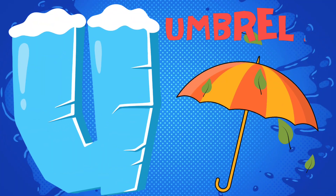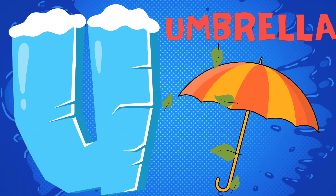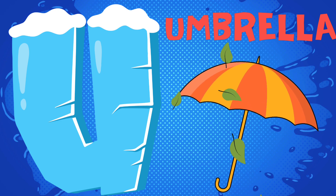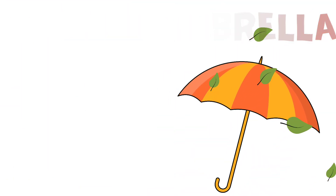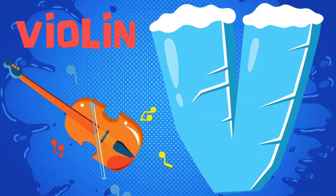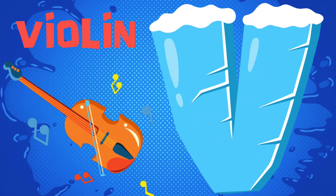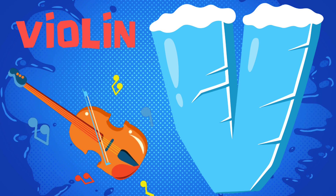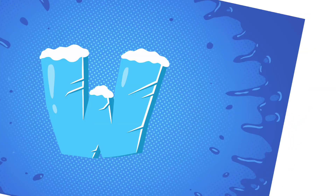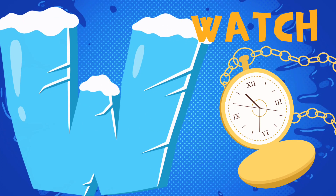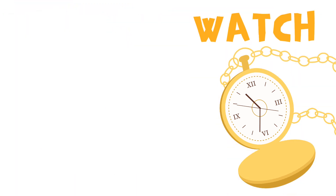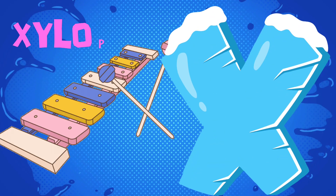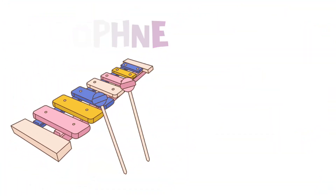U is for umbrella, u-u-umbrella. V is for violin, v-v-violin. W is for watch, w-w-watch. X is for xylophone, x-x-xylophone.